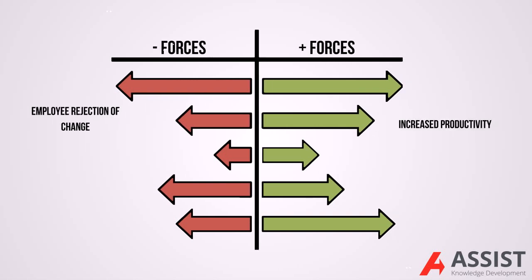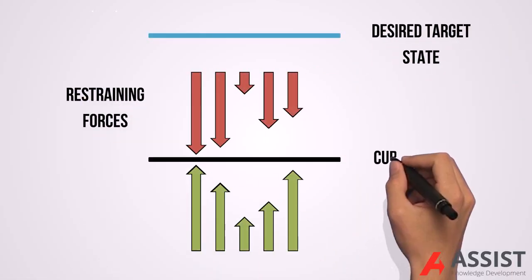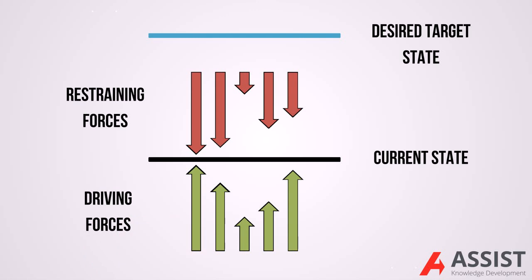An alternative way of representing the force field analysis model shows the impact of negative and positive forces when an organization is attempting to move from a current state to a target state. The black line in the center represents the current state, and the blue line at the top represents the desired target state.